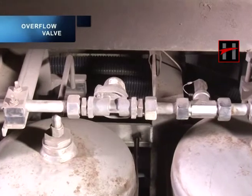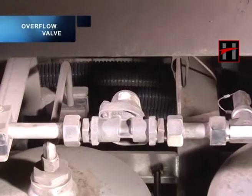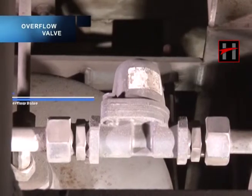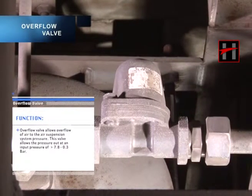The overflow valve allows overflow of air to the air suspension system at a certain input pressure. This valve allows the pressure out at an input pressure of more than 7.8 plus or minus 0.3 bar.